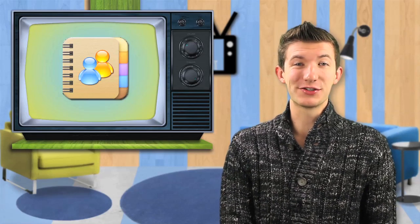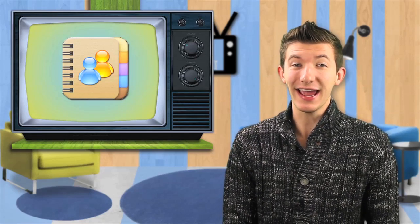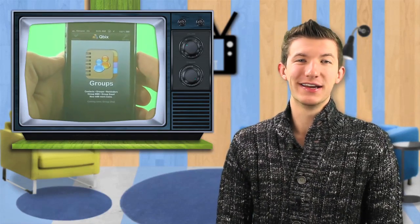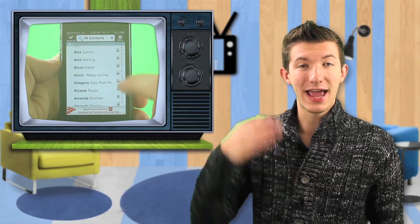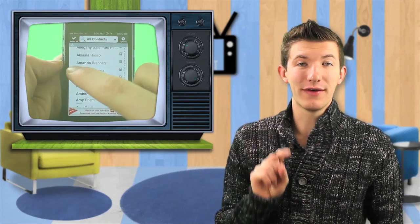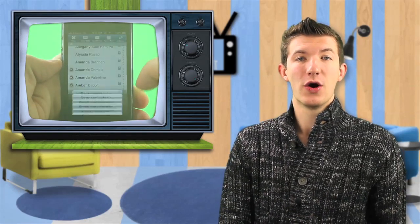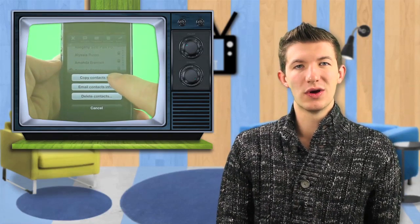Basically what Groups lets you do is categorize your contacts on your iPhone into groups so you can easily open the app, see a list of all of your contacts, check whoever is in your family or your best friends or your coworkers or those people that you talk to when you're stuck in traffic.